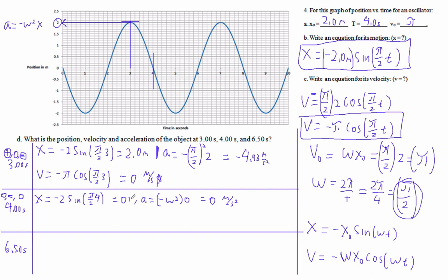Do you have to label the units if it's 0? I don't think you do — but I'm doing it anyway. Our predictions of x and acceleration are correct. For v: the opposite of π times cosine of (π/2 times 4) — that's cosine of a full cycle, which is 1 — so we get negative π, which equals approximately negative 3.14159 meters per second.